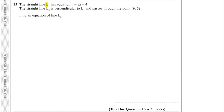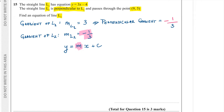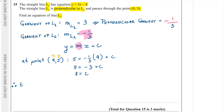Question 15. Line L1 has equation y equals 3x minus 4. Line L2 is perpendicular to L1 and passes through the point (9, 5). The gradient of L1 is 3, so the perpendicular gradient is minus 1 over 3, because perpendicular gradients multiply to minus 1. Using y equals mx plus c: substituting the point gives 5 equals minus one third times 9 plus c, so c equals 8. The equation of L2 is y equals minus one third x plus 8.